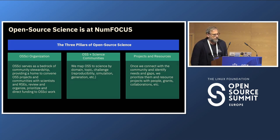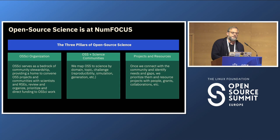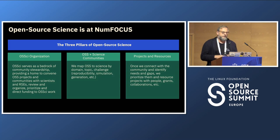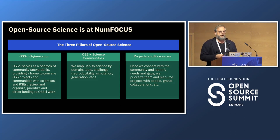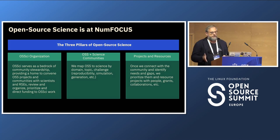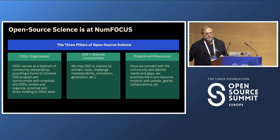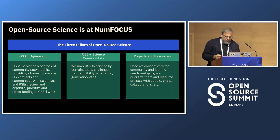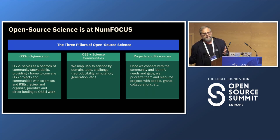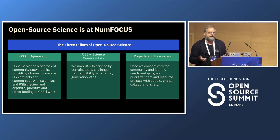Once we have communities of open source developers and scientists who care about specific verticals, we identify needs and gaps, then direct resources there. There is now a huge amount of grants and initiatives in Europe and the US — NSF, OECD, Horizon 2020, at EU, government, and regional levels — directing funding to open source science.